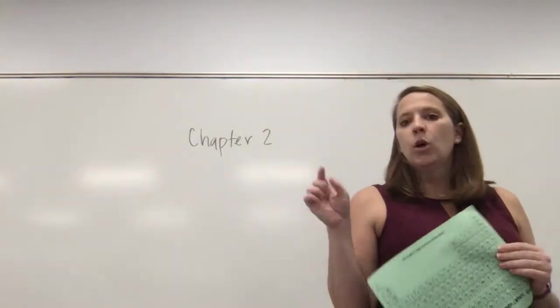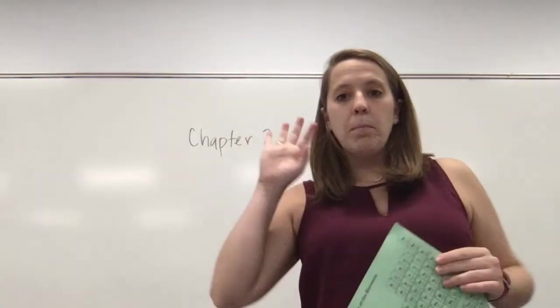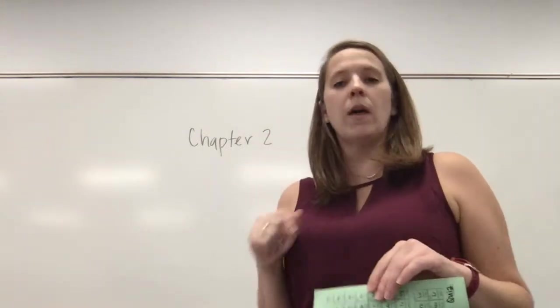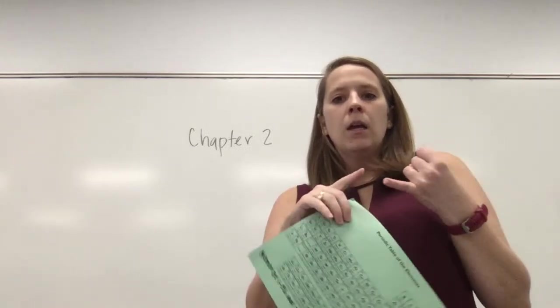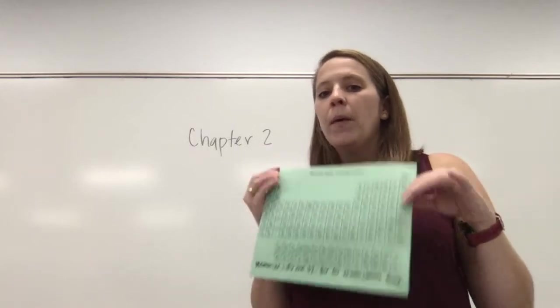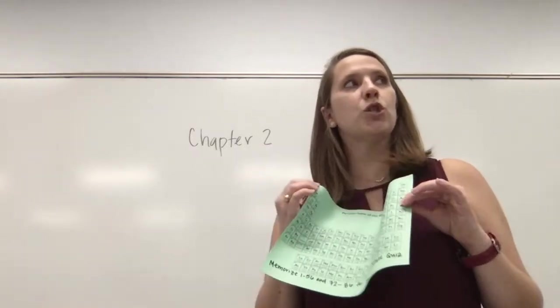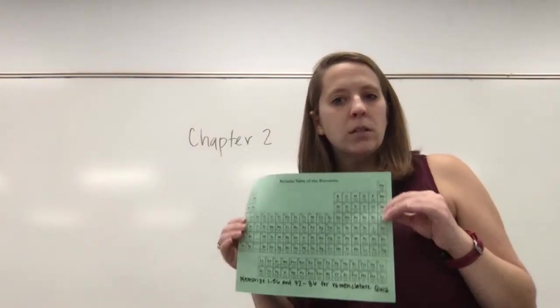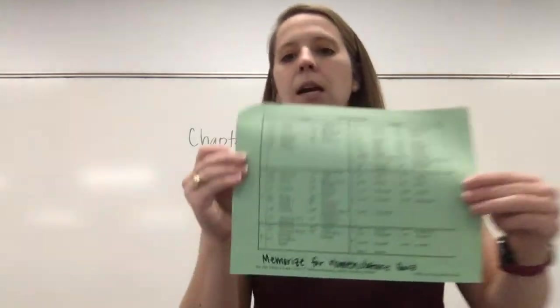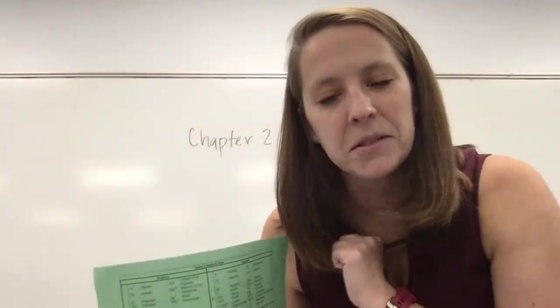If you have that, you can go into Canvas and pull it up. If you don't have access to Canvas because you have one device, the textbook has one in the front cover. You can basically pull one up anywhere, but you will need a periodic table for most of the remaining chapters for the rest of the semester. On the back of mine it has the common ion table, which you do need to know. You can ignore the statement about the nomenclature quiz — that's just because this is an old printout.